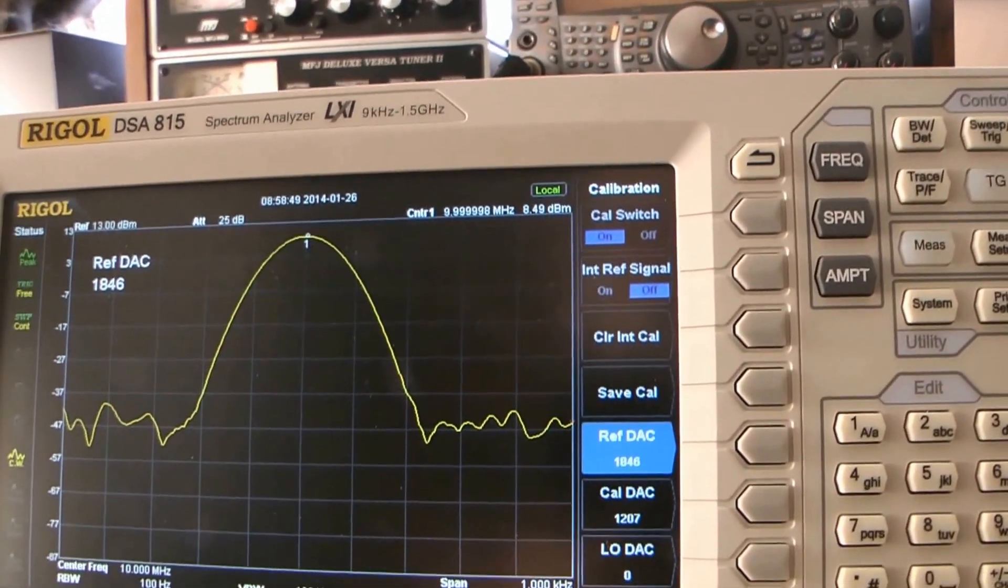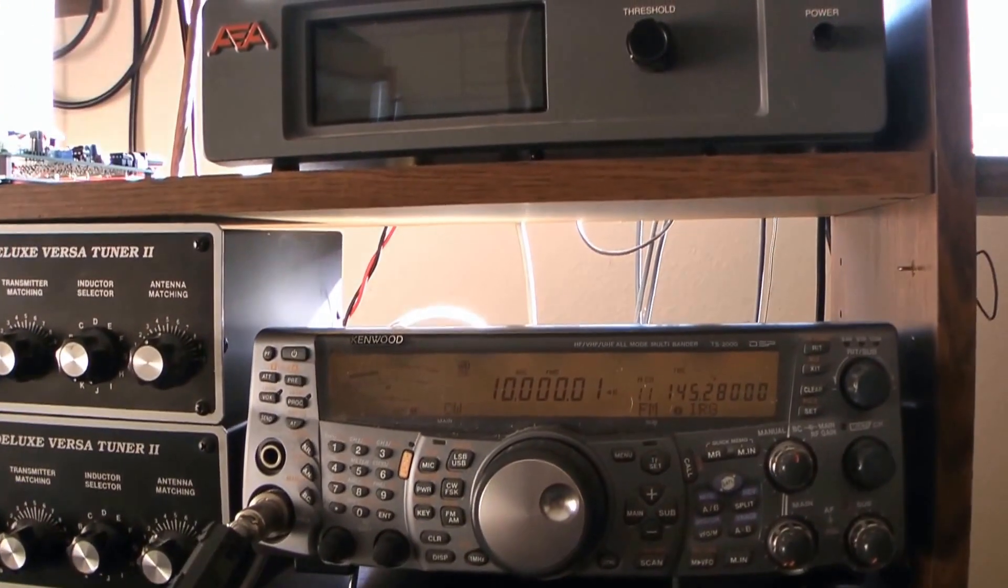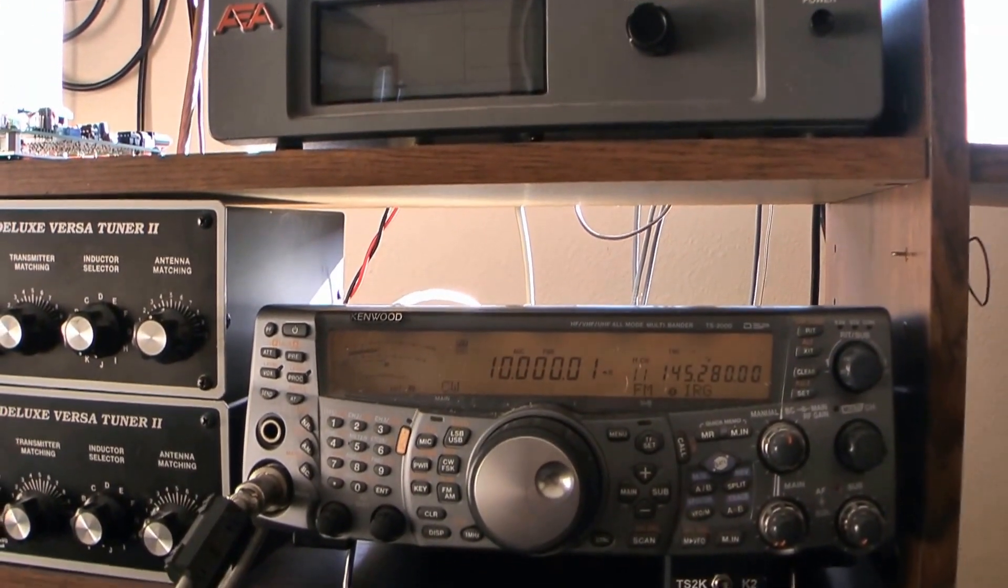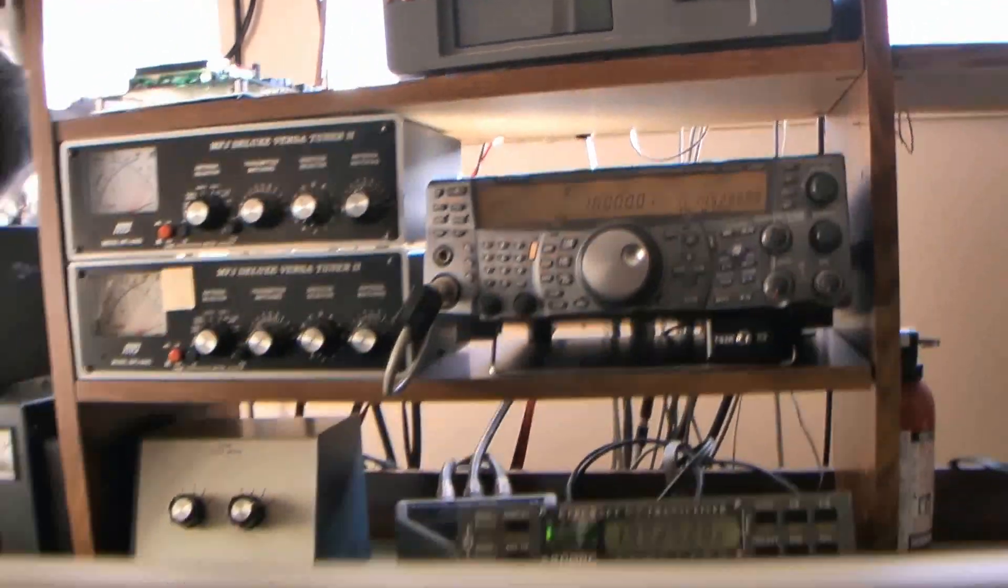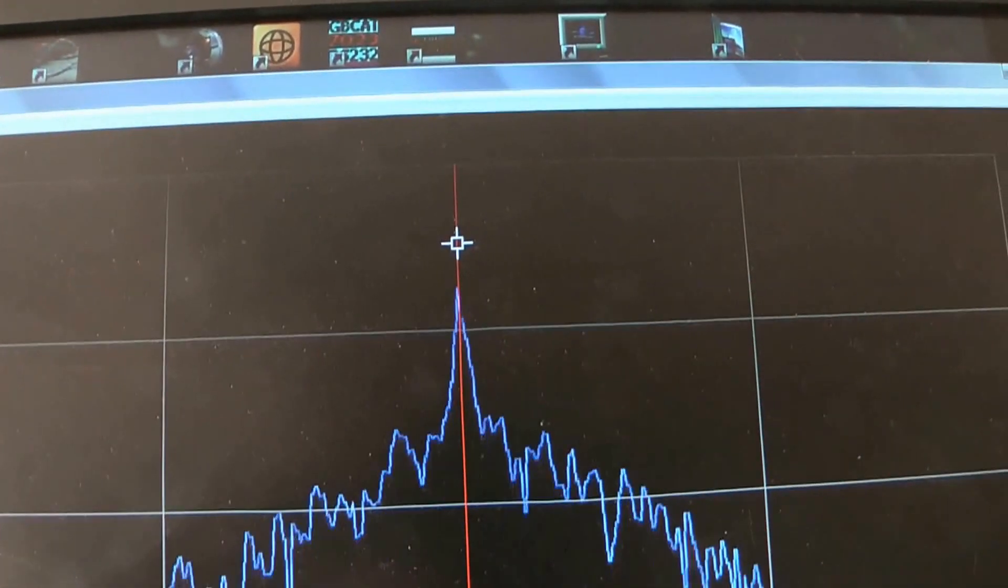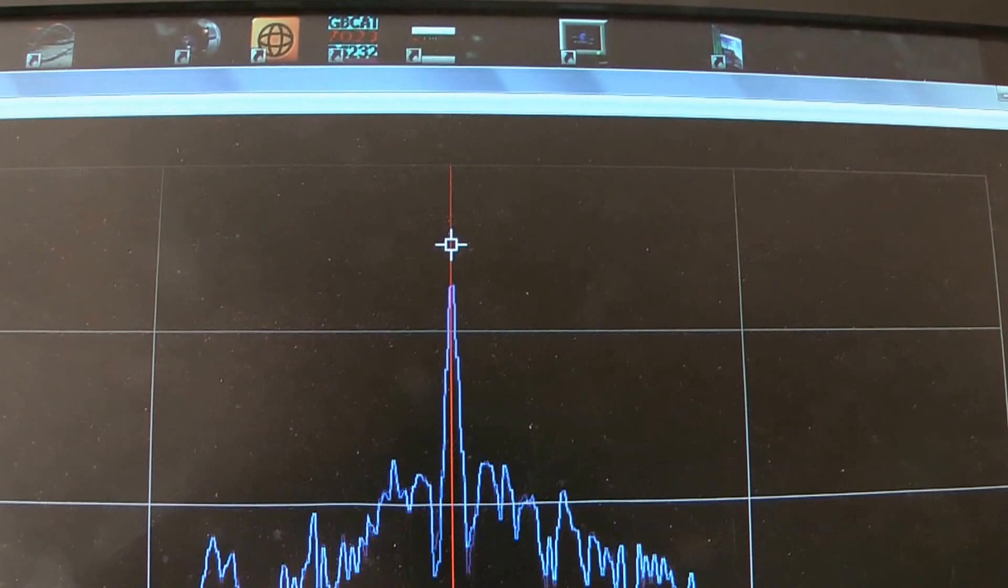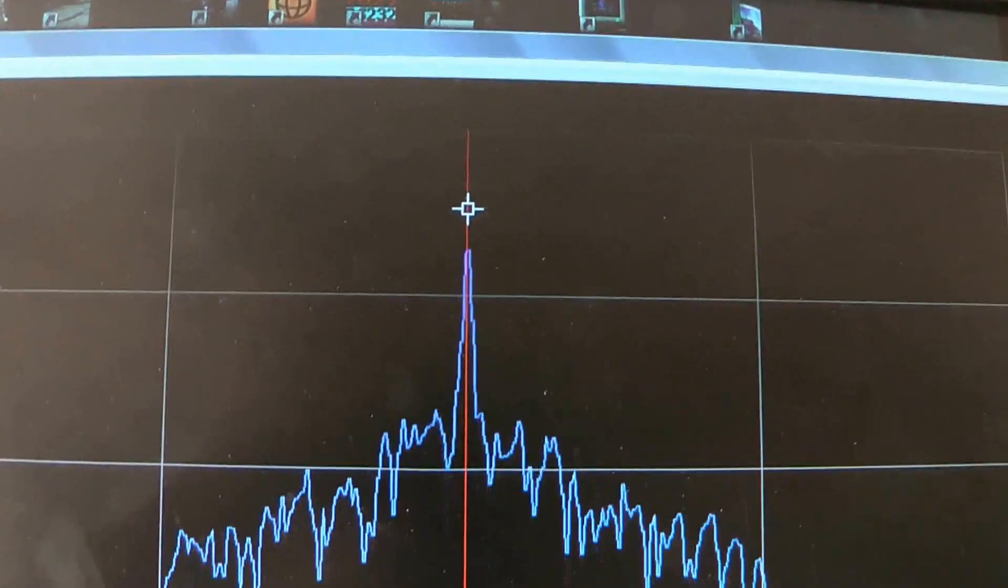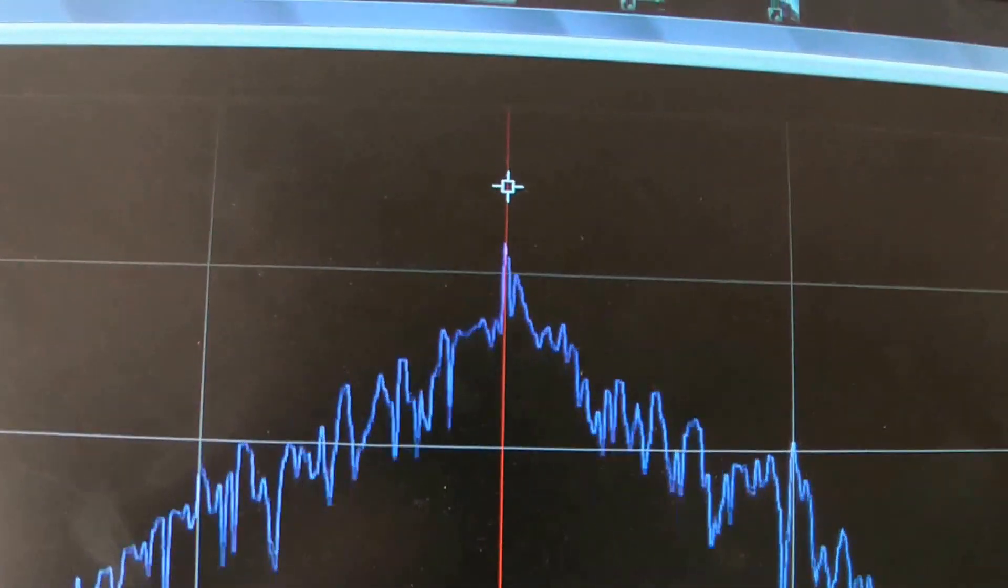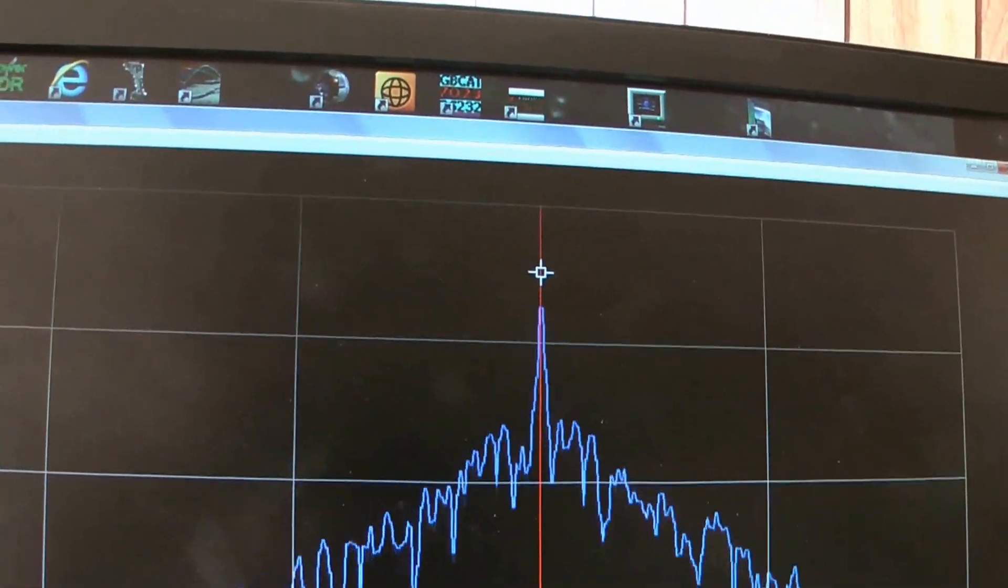So my technique for doing this is to have a receiver on CW listening to 10 MHz WWV, and then I have a program called Spectrogram that's showing me that signal. So this is strictly a reference point. I don't care about the absolute accuracy of Spectrogram or my receiver. I'm just giving myself a reference signal.